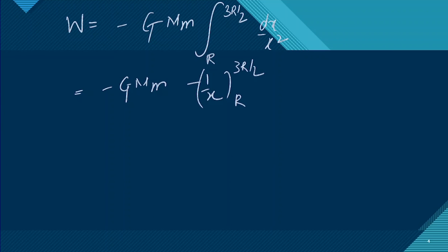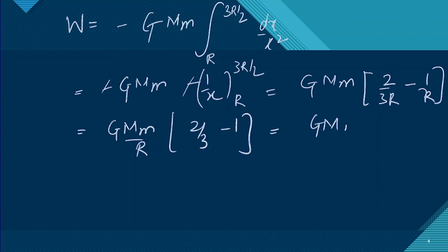Putting the limits of R to 3R/2, this negative will cancel, so this will be GMm times (2/3R minus 1/R). So this is GMm/R times (2/3 minus 1). So our expression comes out to be like this. The amount of work required will be this.